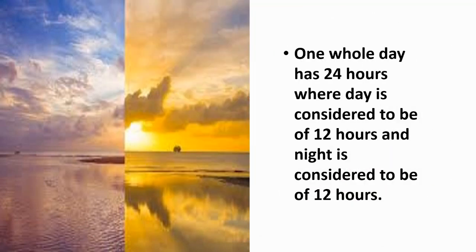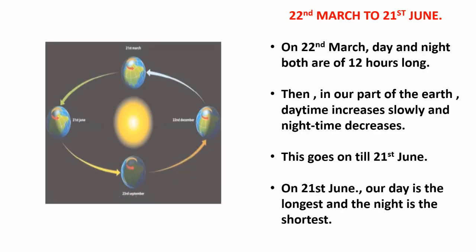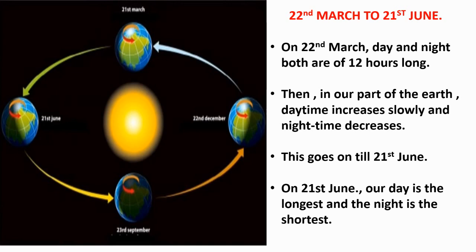One whole day has 24 hours, where the day is considered to be 12 hours and the night is considered to be 12 hours. Now let us understand the duration of day and night. Children, can you see the picture? In the picture, there are different days and months shown.